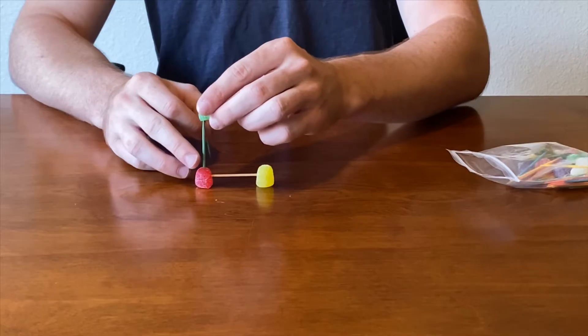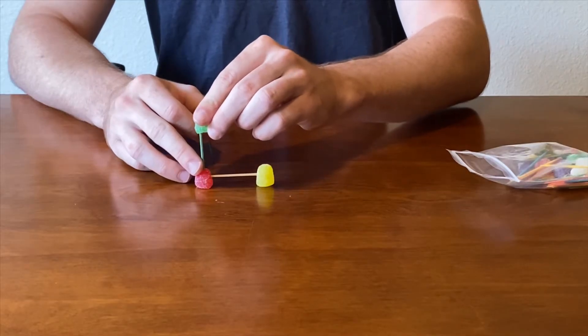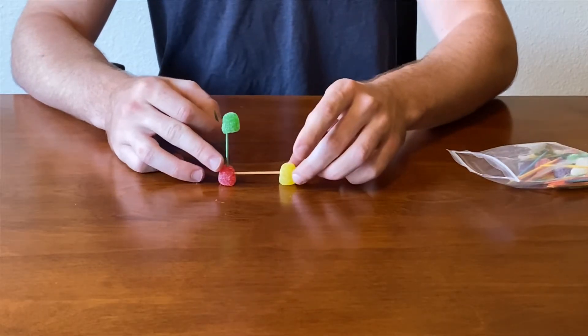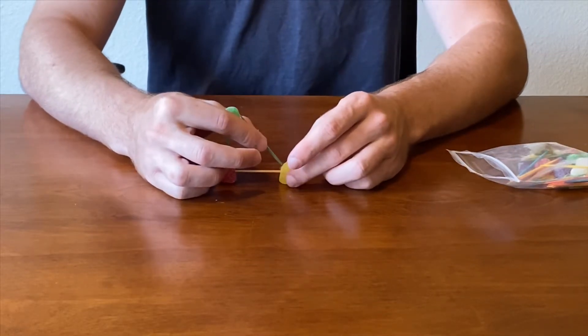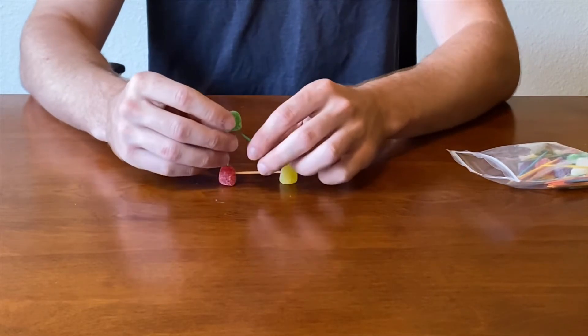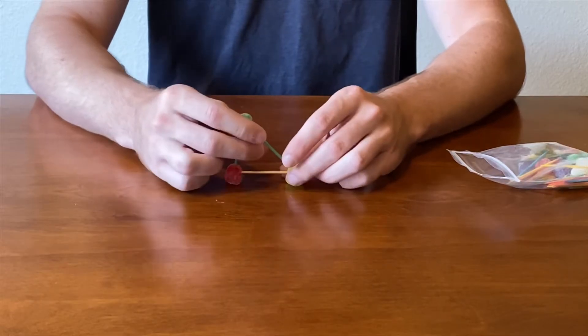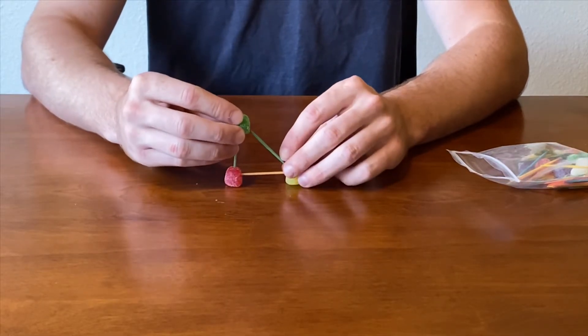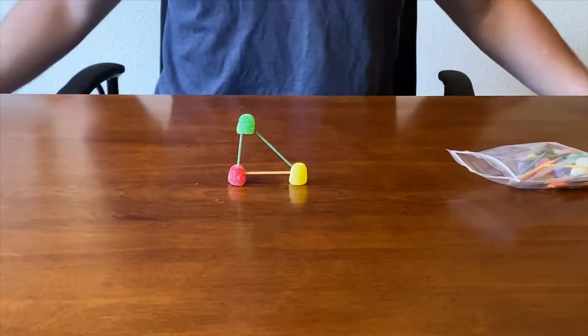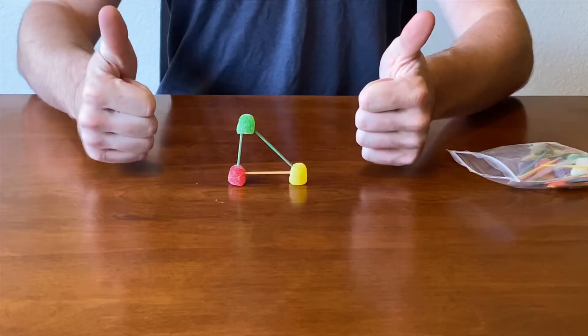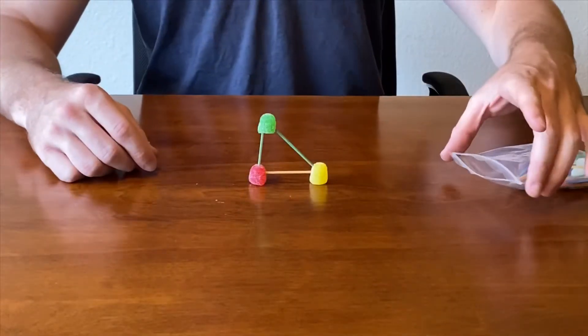Put your other gumdrop right there on the top, and then finish your triangle with your other toothpick. It's okay if it's a little wobbly or if it's not perfect - it's all right because I mean, it's gumdrops and toothpicks, you only get so good. Just like that, first step is done.